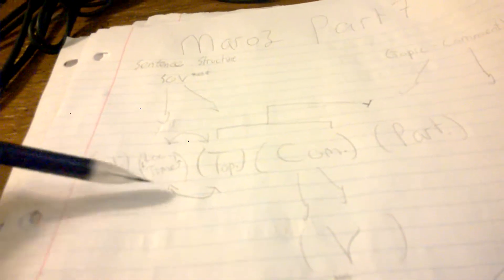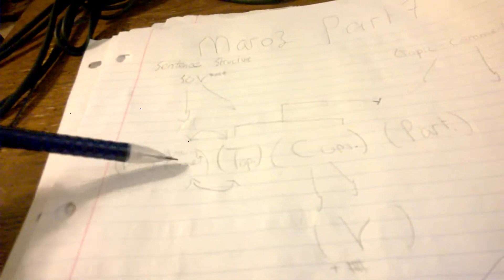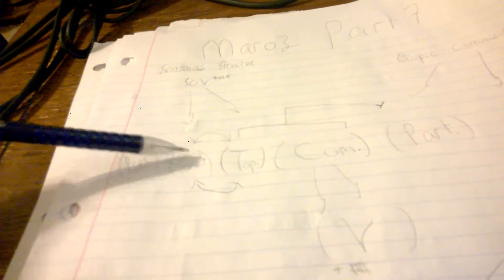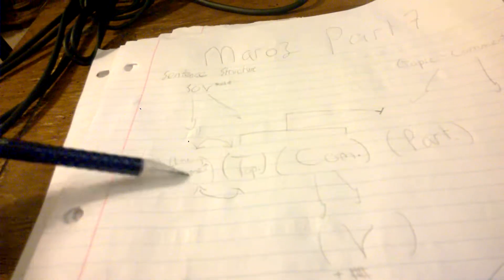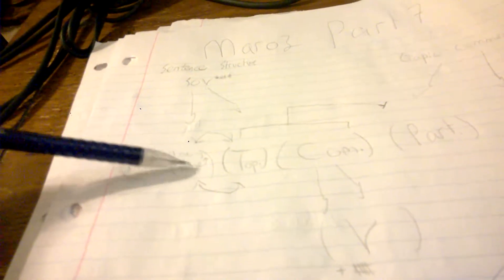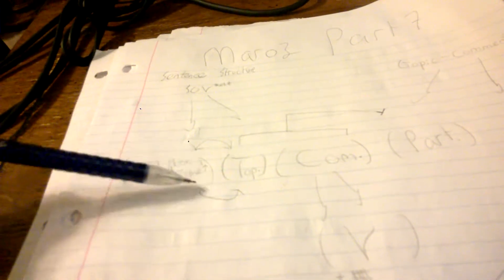Anyway, taking it as a topic comment language, this is the general sentence structure. First the sentence initial particle, then the location or the time. Either one can come before the other, it just matters in level of importance, so the most important one comes first.